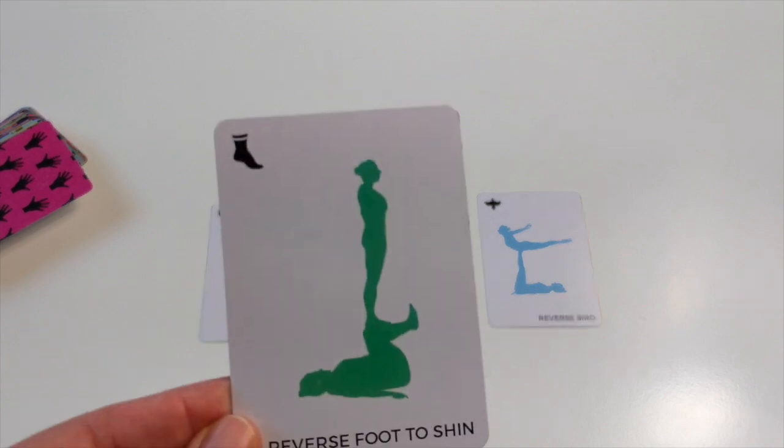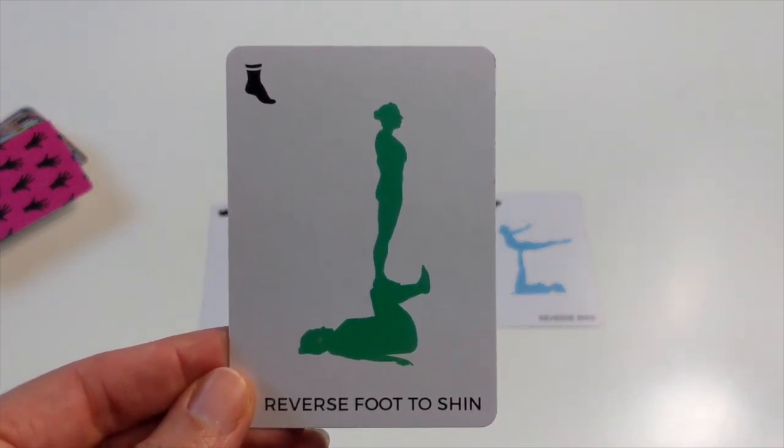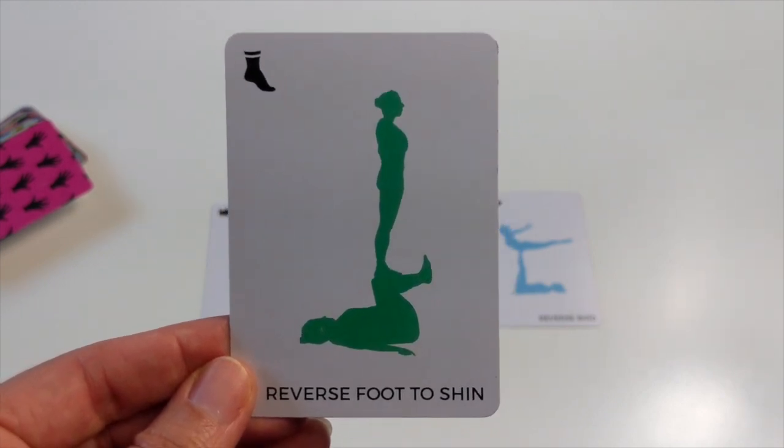Reverse foot to shin shows a lot of strength and determination and power and presence. The flyer and base can work together here to create stillness.